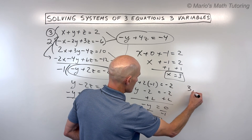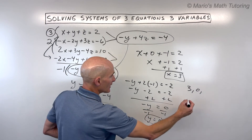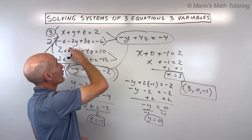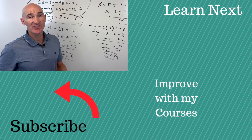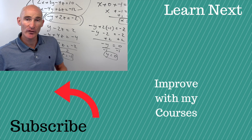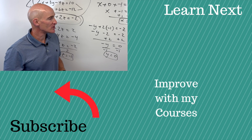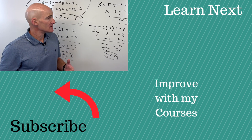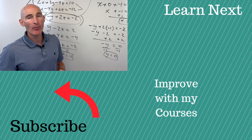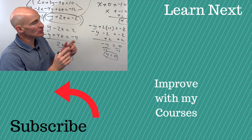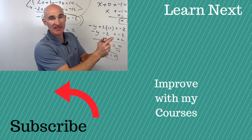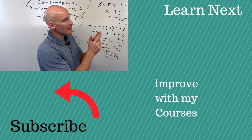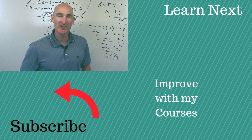Writing the solution in alphabetical order: x equals 3, y equals 0, z equals negative 1, so the triple is (3, 0, -1). Remember, you can check your answer by putting it into all three equations and seeing if it makes all three true. If it does, you know you've got a good solution. If you want more practice, I'll put a link to another video on this exact same topic — working with three variables and three equations. Follow me over to that video and we'll get some more practice.